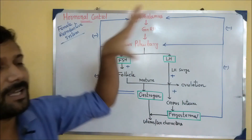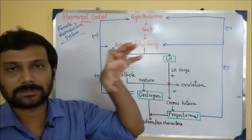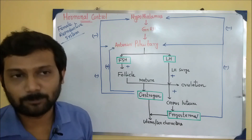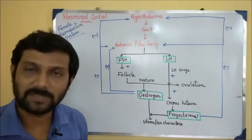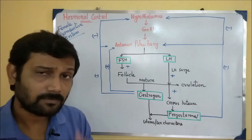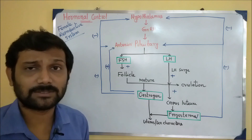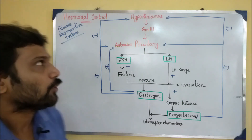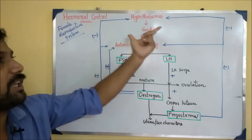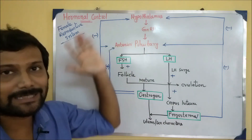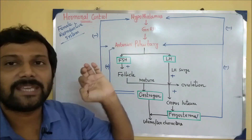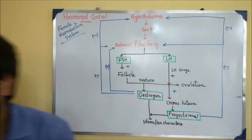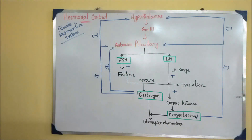First of all, the hypothalamus is the master of master glands — as studied in Class 11, it is called the master gland. The hypothalamus secretes a hormone called GnRH, which stands for gonadotrophin releasing hormone.